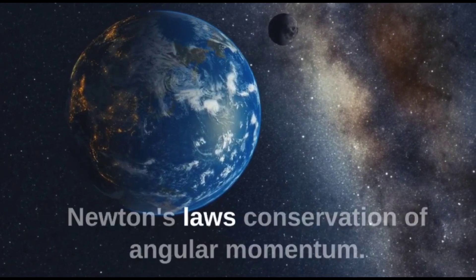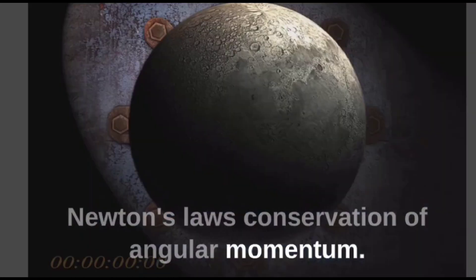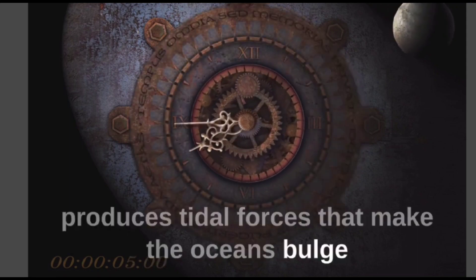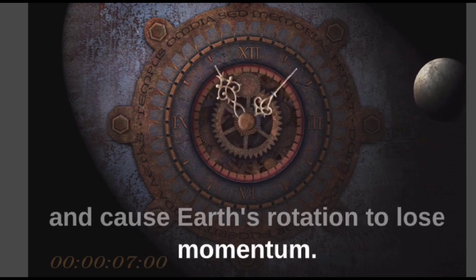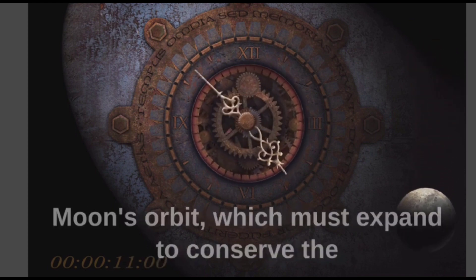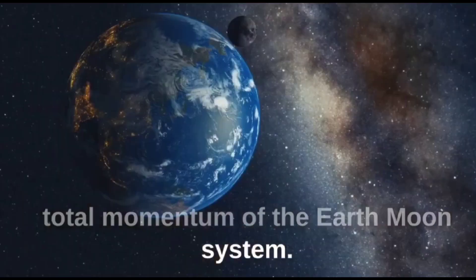It boils down to one of Newton's laws, conservation of angular momentum. As the moon's gravity pulls on Earth, it produces tidal forces that make the oceans bulge and cause Earth's rotation to lose momentum, slowing Earth's rotation in turn speeds up the moon's orbit, which must expand to conserve the total momentum of the Earth-moon system.